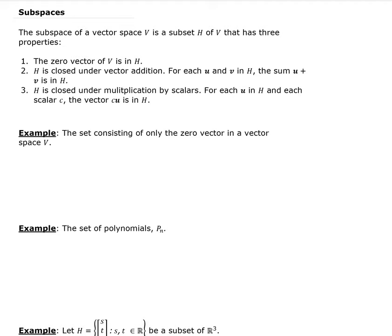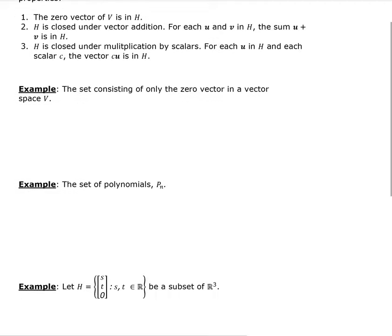Here are a few examples. The first and easiest example — the most simple subspace — is just the zero vector. We can easily verify that. Obviously, for the first property, since the zero vector is in V, therefore it's in H. So the zero vector is there by default.